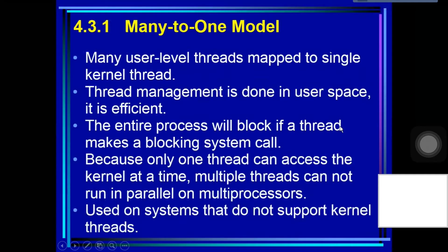First, the many-to-one model. The many-to-one model maps many user-level threads to one kernel thread. Thread management is done by the thread library in user space, so it is efficient. However, the entire process will block if a thread makes a blocking system call. Also, because only one thread can access the kernel at a time, multiple threads are unable to run in parallel on multiple processors.